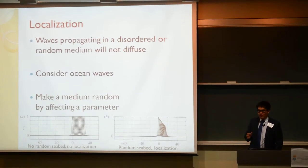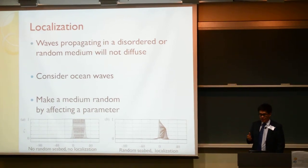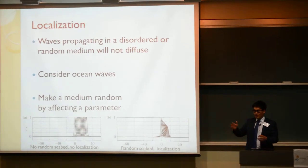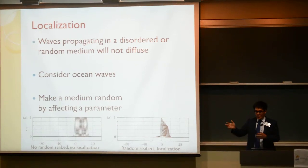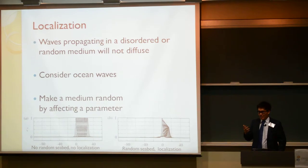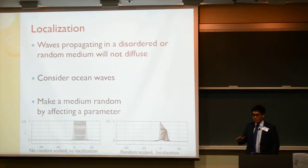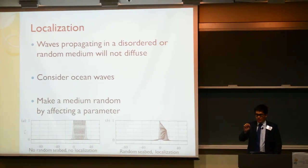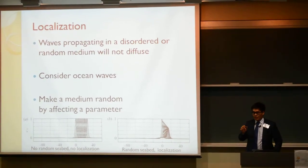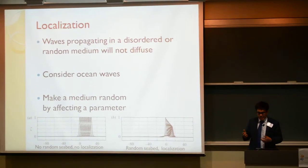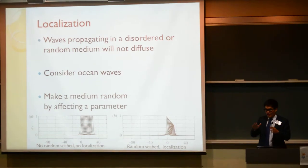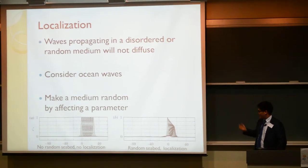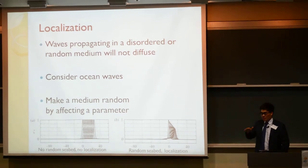Let's talk about localization. It's a concept from solid-state physics, where waves propagating in a disordered medium will not diffuse. If you consider the ocean — when the seabed is very smooth, waves just travel to the shore as plane waves, peacefully. But if you have a rough seabed with a bunch of rocks at the bottom, a plane wave comes in, and when it reaches the obstacles, they scatter the wave, creating more waves that interfere with the original wave. In the end, this slows the wave down and makes it attenuate. So with a random seabed, the wave won't go very far and will start dying out.